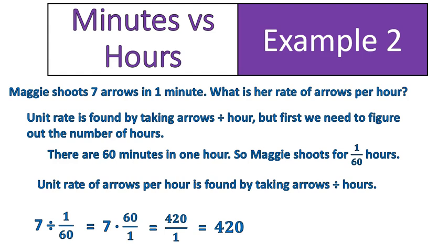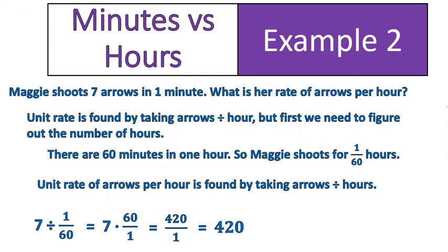Now, that means she would consistently be able to shoot all of these arrows at the same rate she did within 1 minute, which is a little challenging. I don't think a person could continue at that rate for a full hour — it would be very challenging. But mathematically speaking, that's what it is.